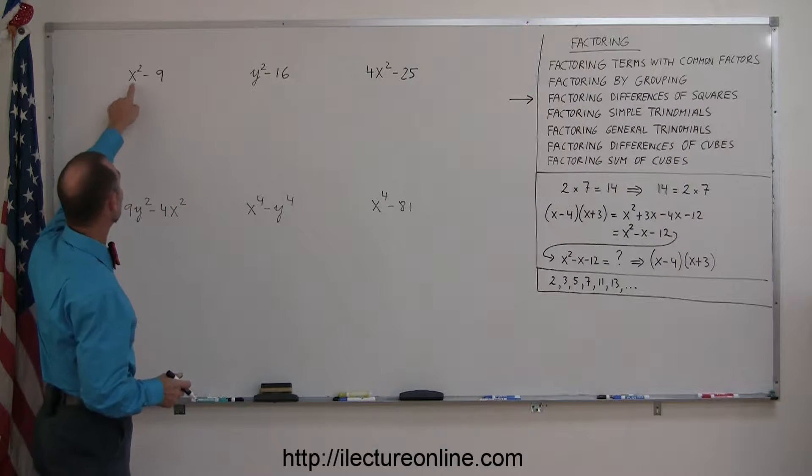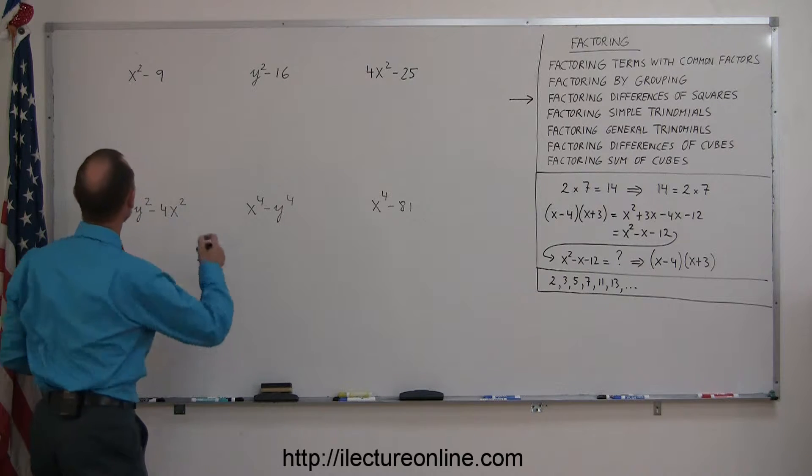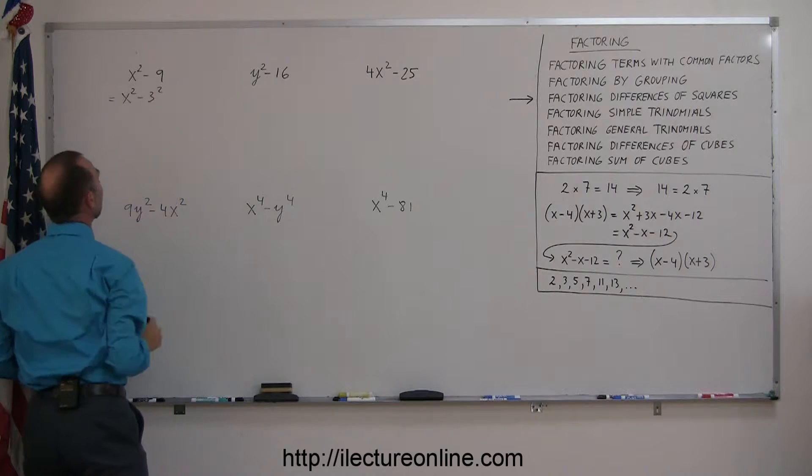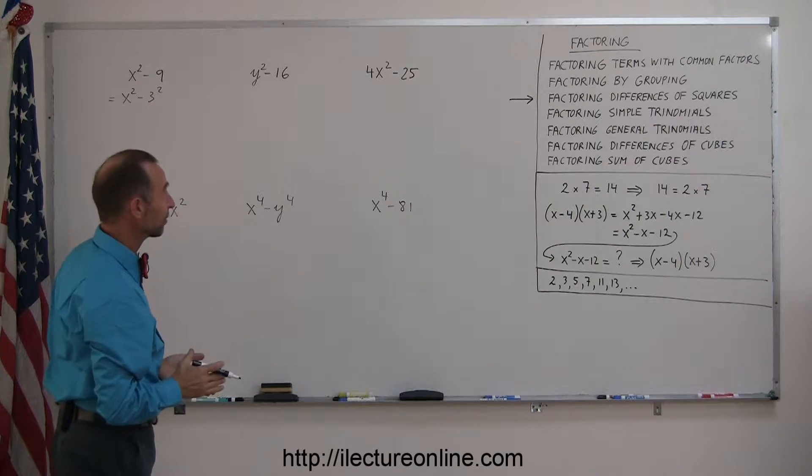For example, here we have x squared and this is 3 squared. So we can write this as x² - 3². And then once you have something in that form, it's really easy to factor.